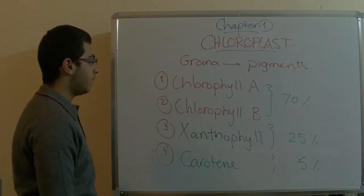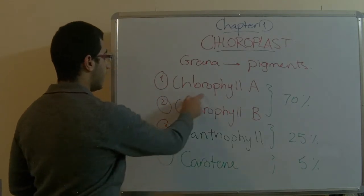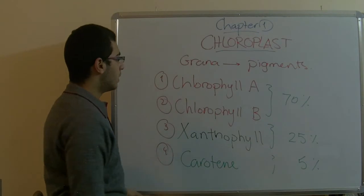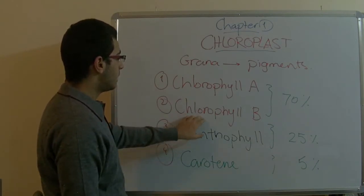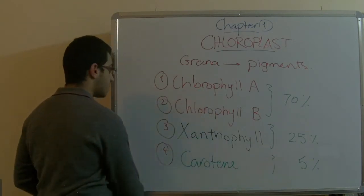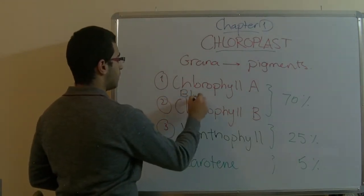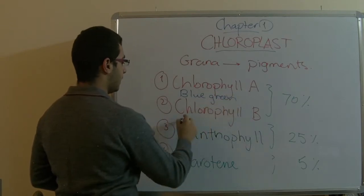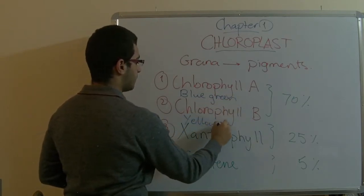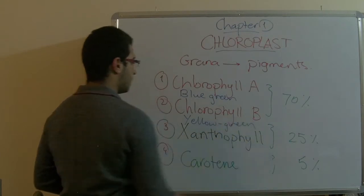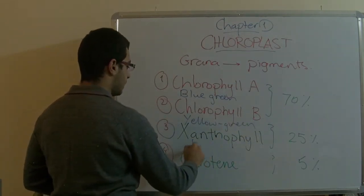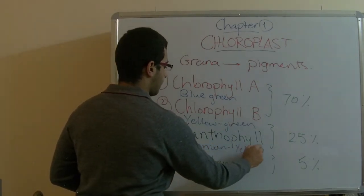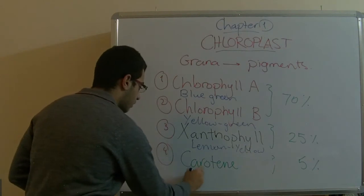Those are the four main pigments. Here, chlorophyll A is blue-green, and chlorophyll B is yellow-green. The xanthophyll is lemon yellow, and the carotene is orange yellow.